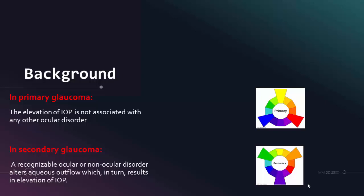While in secondary glaucoma, there is a recognizable ocular or non-ocular disorder which interferes with aqueous outflow. This will lead to elevation of the intraocular pressure.